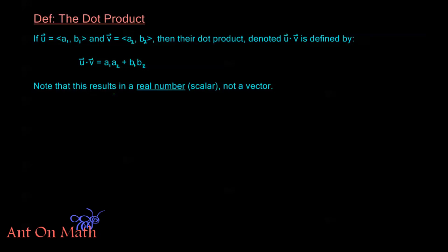It's very important to note that this result is just a real number. a1 times a2 is a real number, b1 times b2 is a real number — we're just adding those numbers together and we get a real number as the result. We do not get a vector. Two vectors dotted together gives a real number.